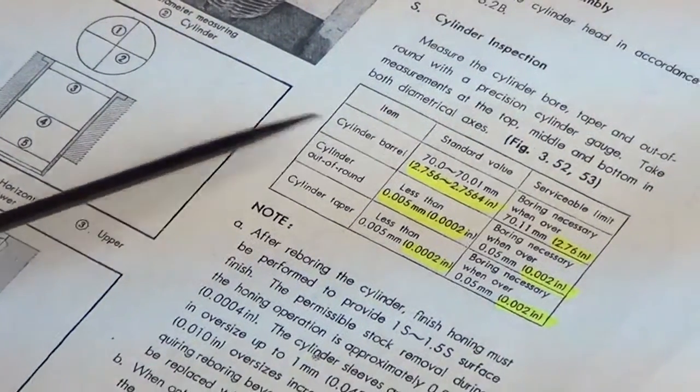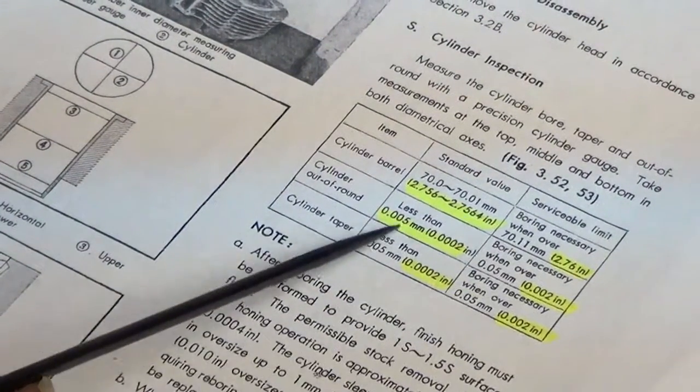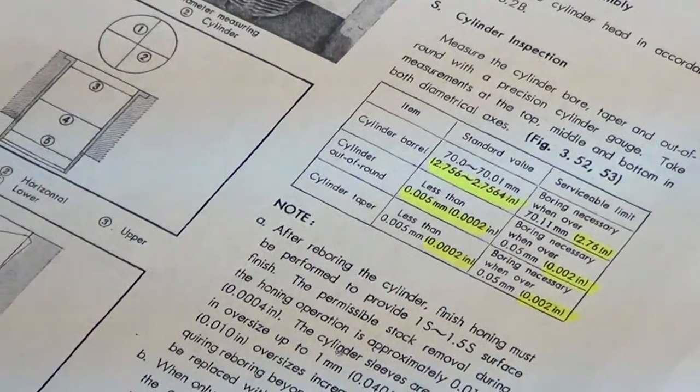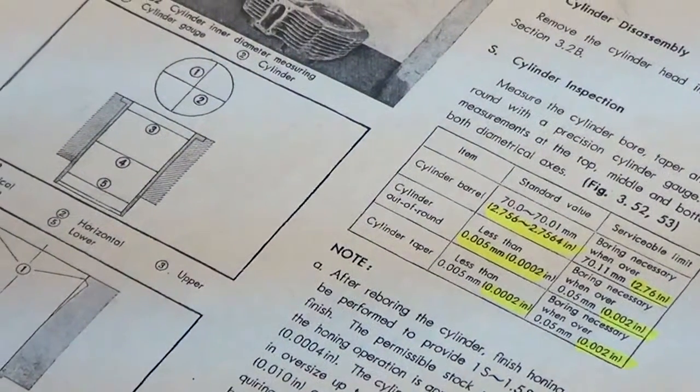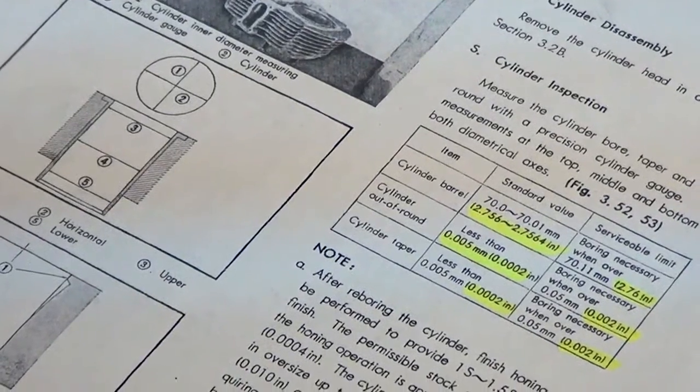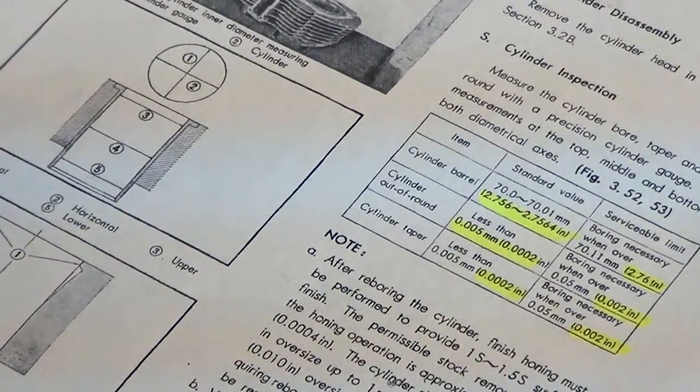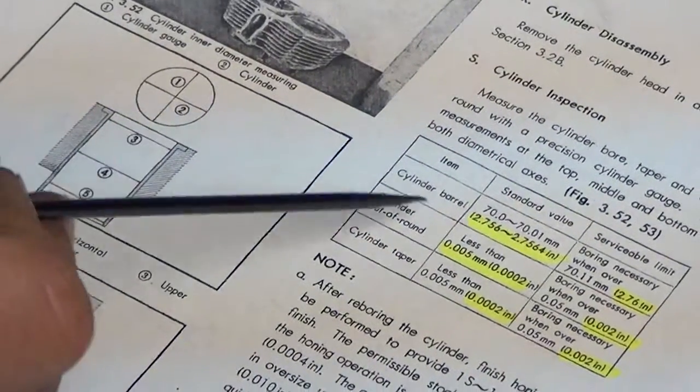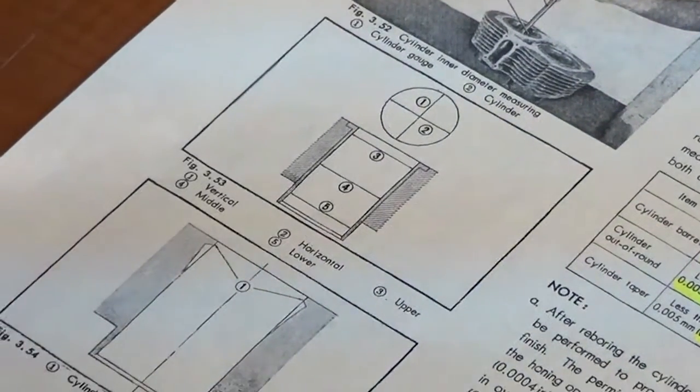So this is the bore. This is the out of rounds. And then this is the taper. They give us both metric and SAE or American measurements. Now, all of my measuring tools are in SAE. So we're going to be using the highlighted values here for our reference. And it doesn't matter, metric or SAE works, but here in the US, we tend to have a lot more precision measuring tools that are in SAE versus metric.